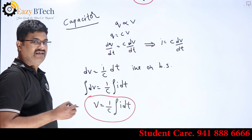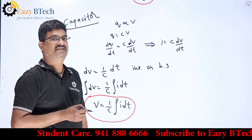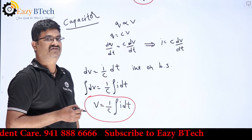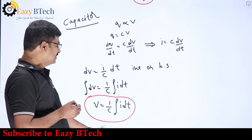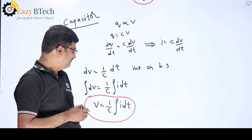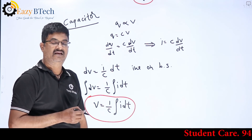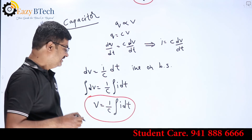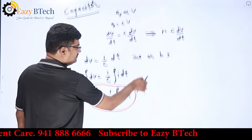The current across the capacitor is i = C·dv/dt. Rearranging and integrating both sides, we get the voltage equation: v = (1/C)·∫i dt. So the voltage across the capacitor is v = (1/C)·∫i dt.